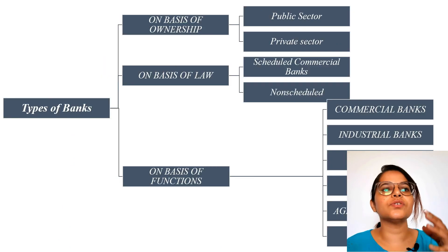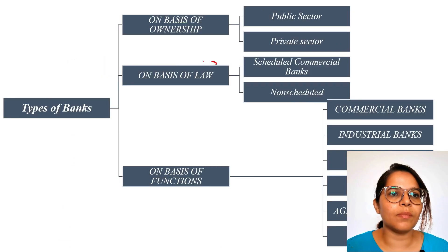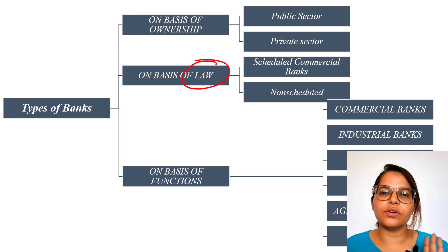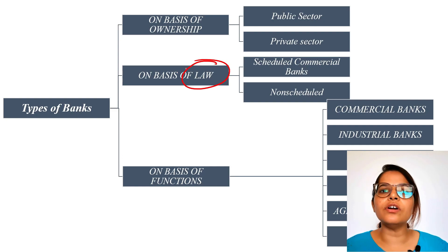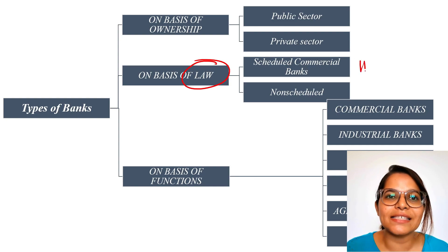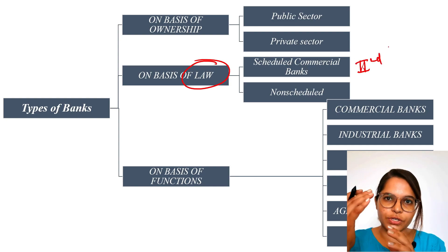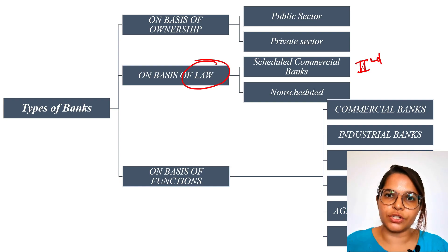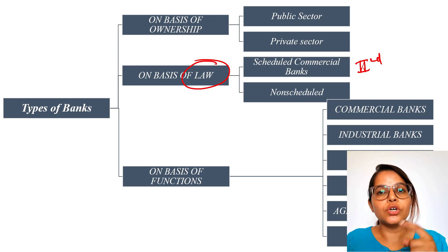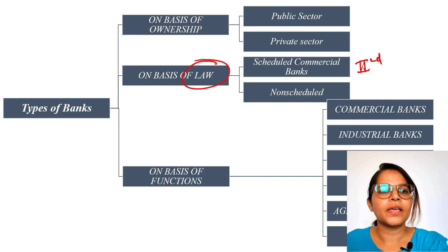On the basis of law, we can have two different types of banks: scheduled banks and non-scheduled banks. Understanding these is very easy. Scheduled banks are those banks whose name is mentioned in the RBI's Second Schedule. If a bank's name appears in that Second Schedule, it means it is a scheduled bank and has followed certain rules and regulations to qualify.